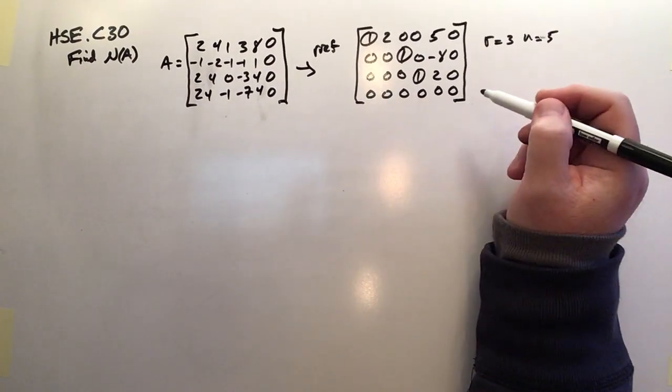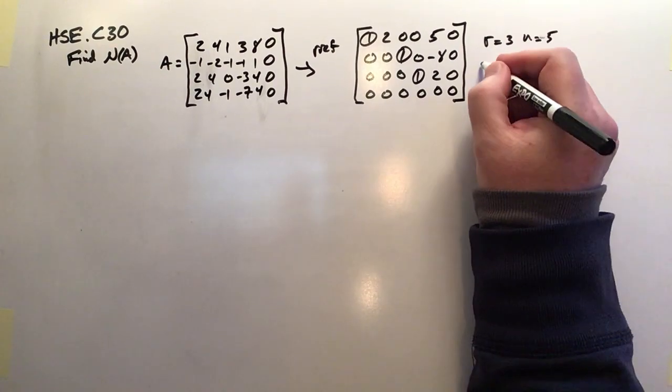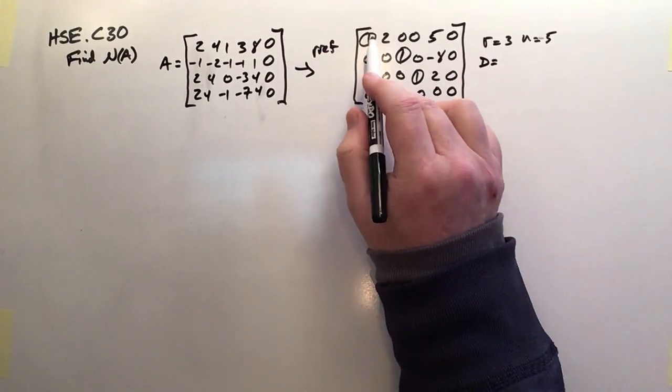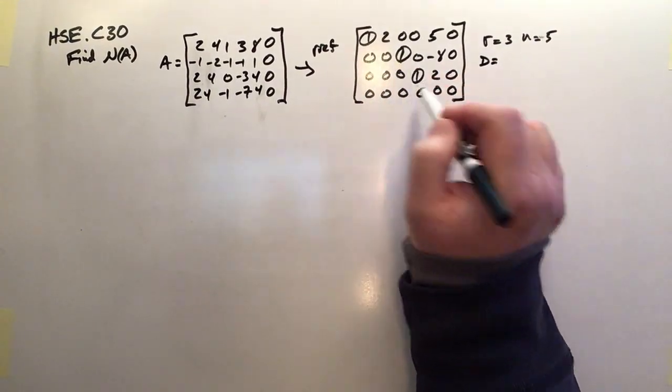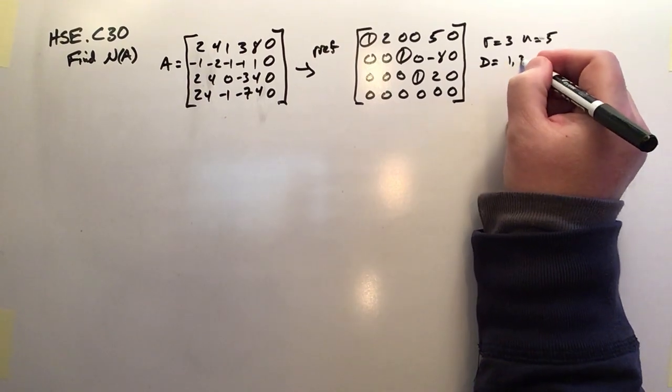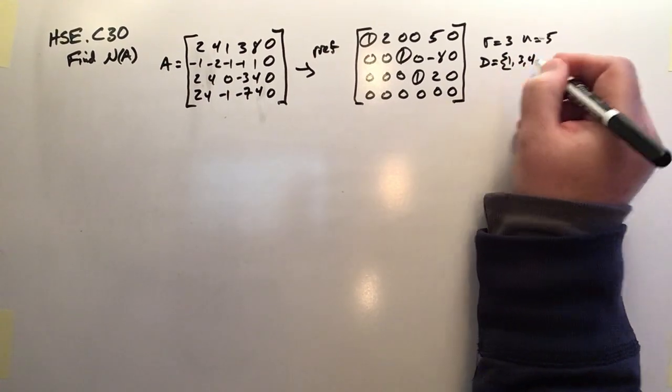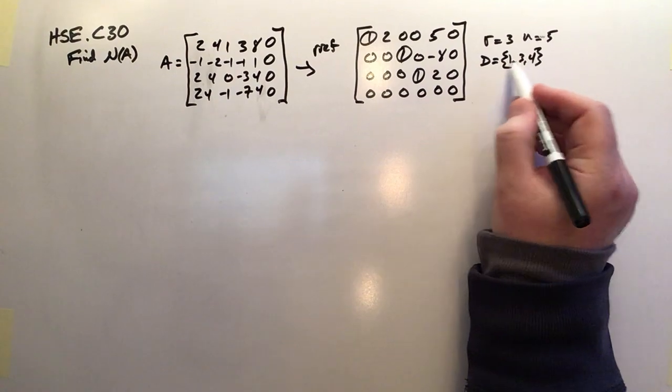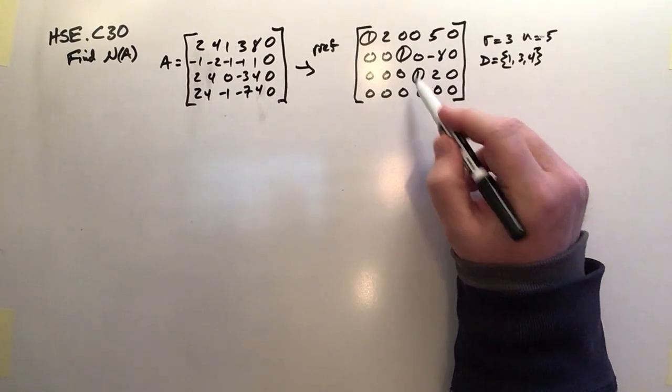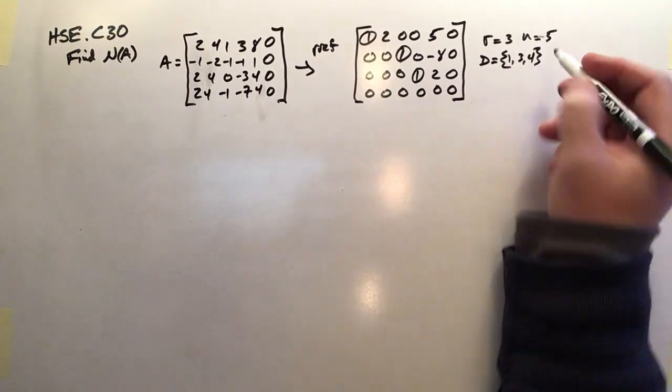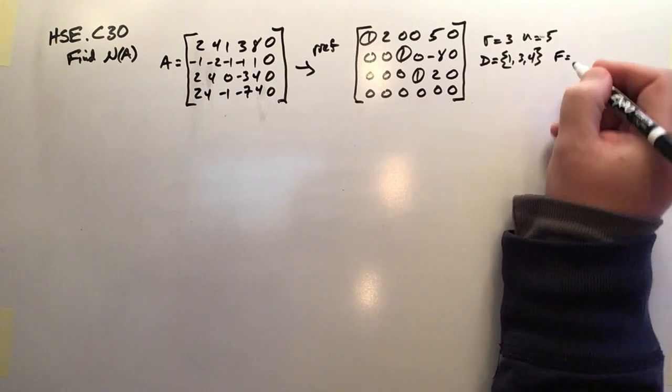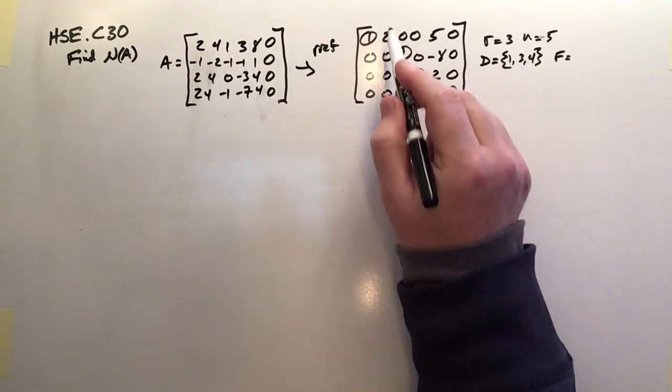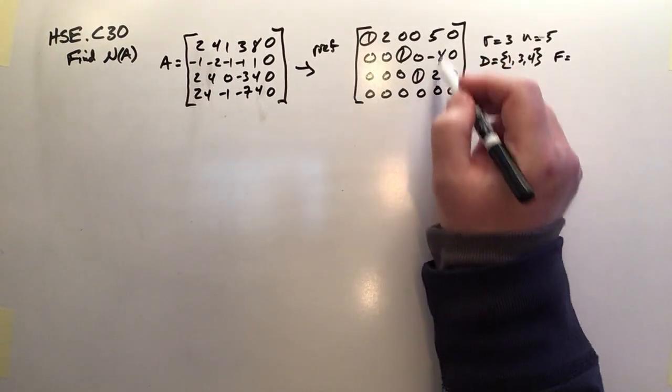It isn't that there's no solution to the system. Our D is equal to 1, 3, and 4. So these are the variables that are going to need explicit relationships in terms of other variables. F gives us our free variables, and that's 2 and 5.